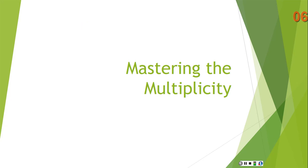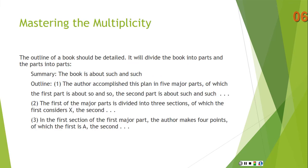Mastering the Multiplicity is about finding the way that all the details fit together — the multiplicity of details. When you're outlining a book, you're trying to fit all the parts together according to what the book is about. The outline should be very detailed. It will divide the book into parts, and then the parts into parts, and those parts into parts, and so on.